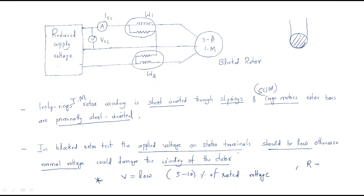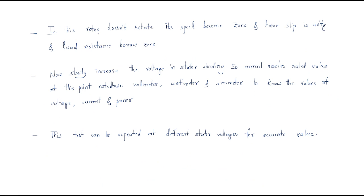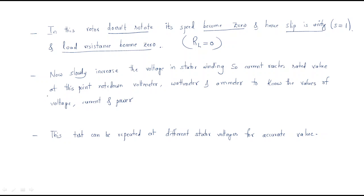Because the rotor is blocked and doesn't rotate, its speed becomes zero. Therefore slip s equals unity (s = 1), and the load resistance becomes zero. The resistance of the rotor is approximately equal to zero when rotor speed is zero.